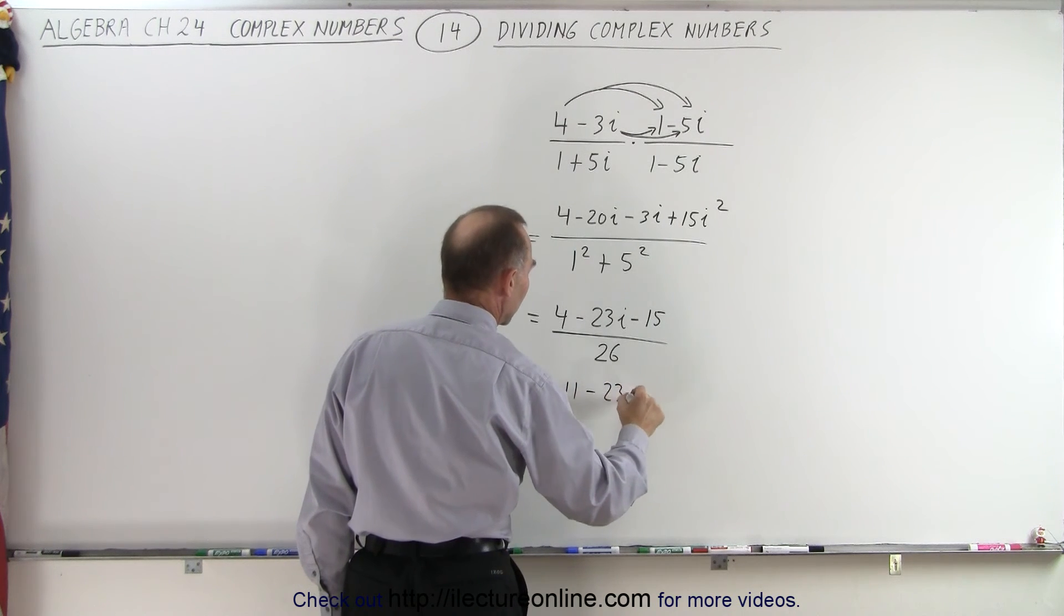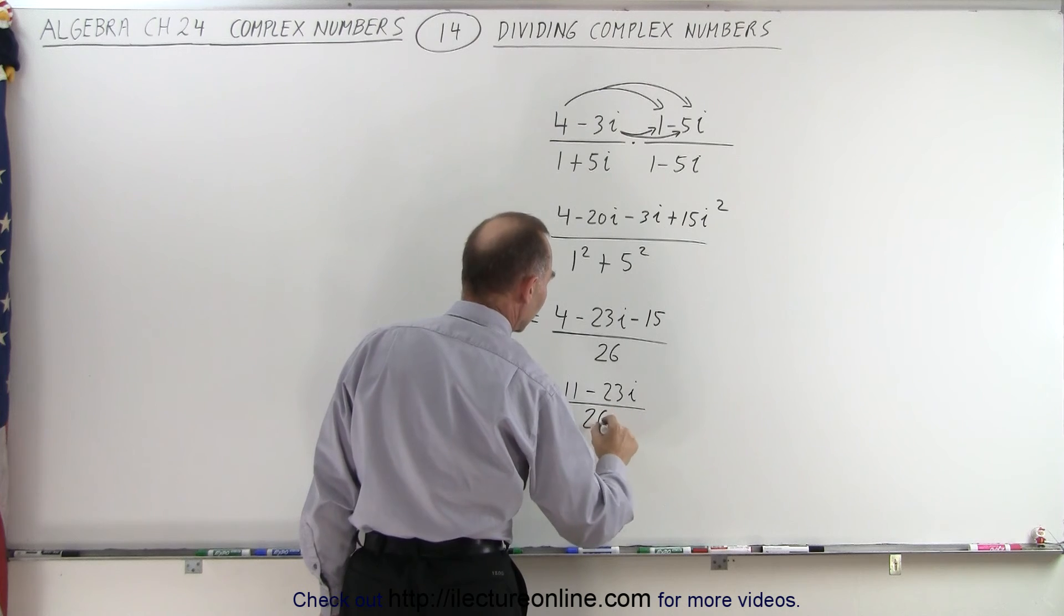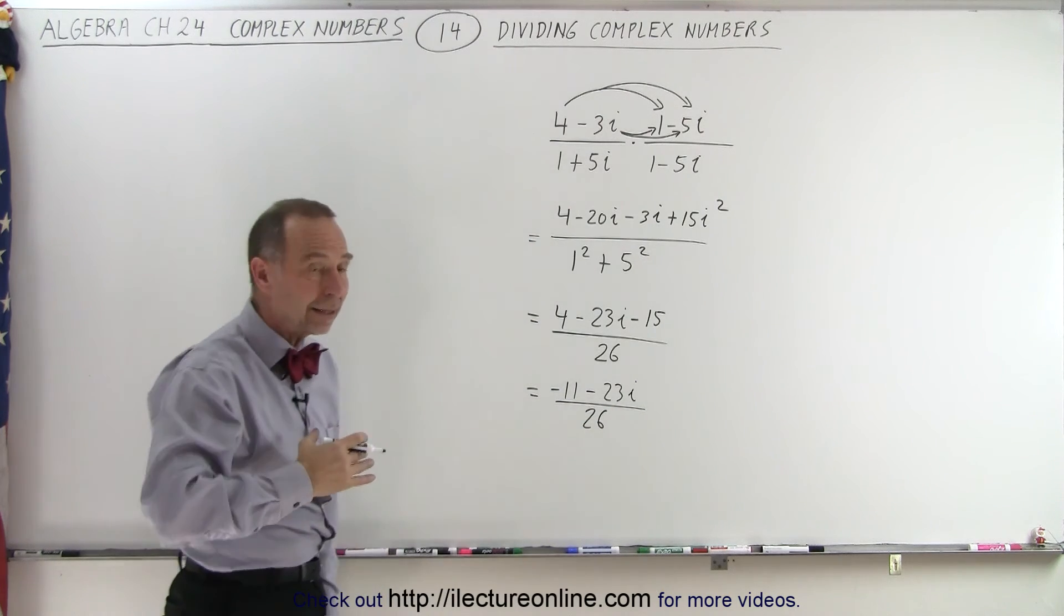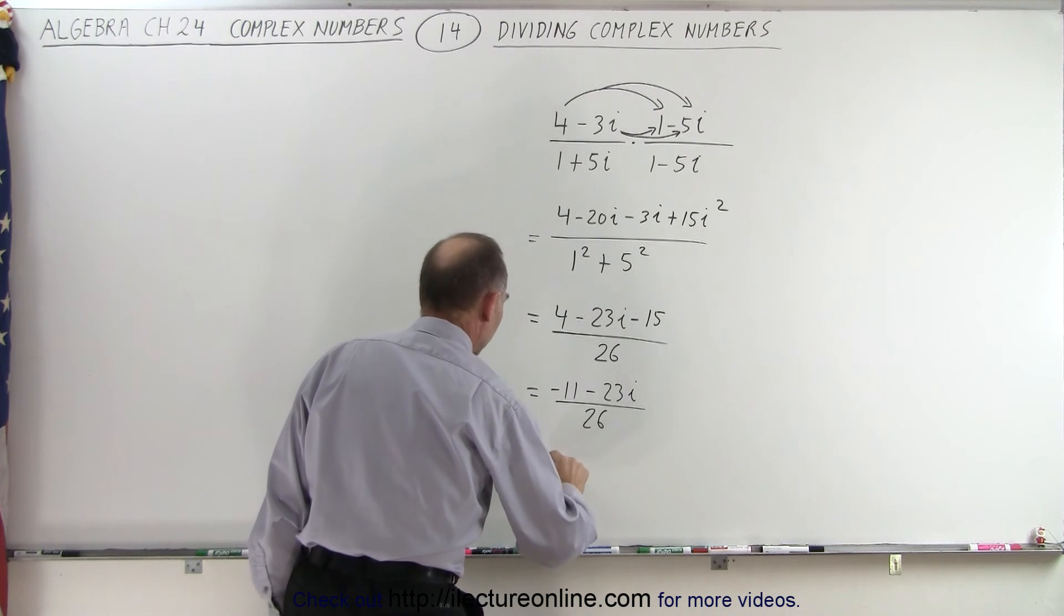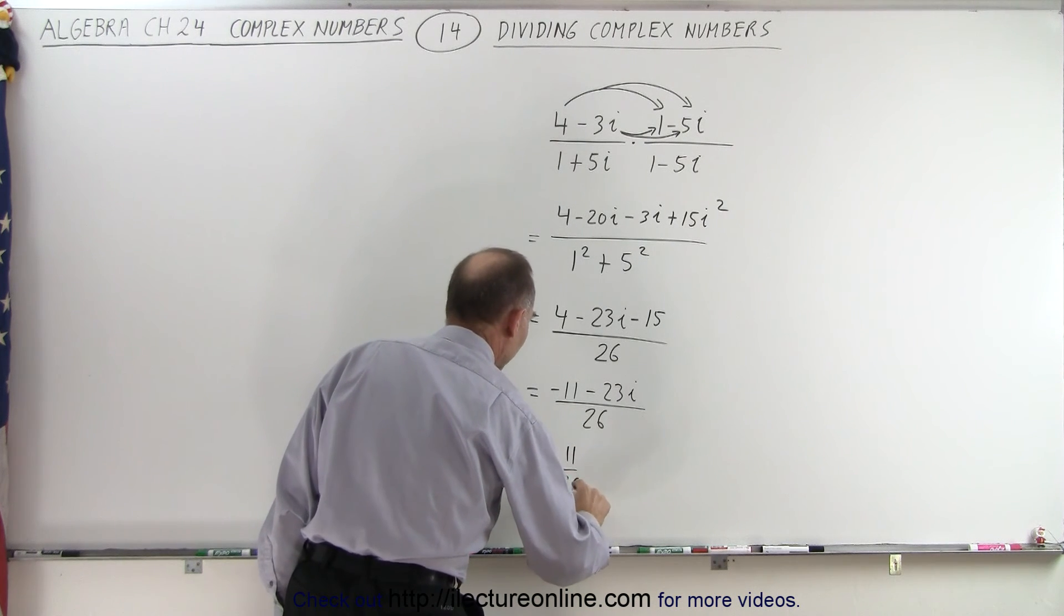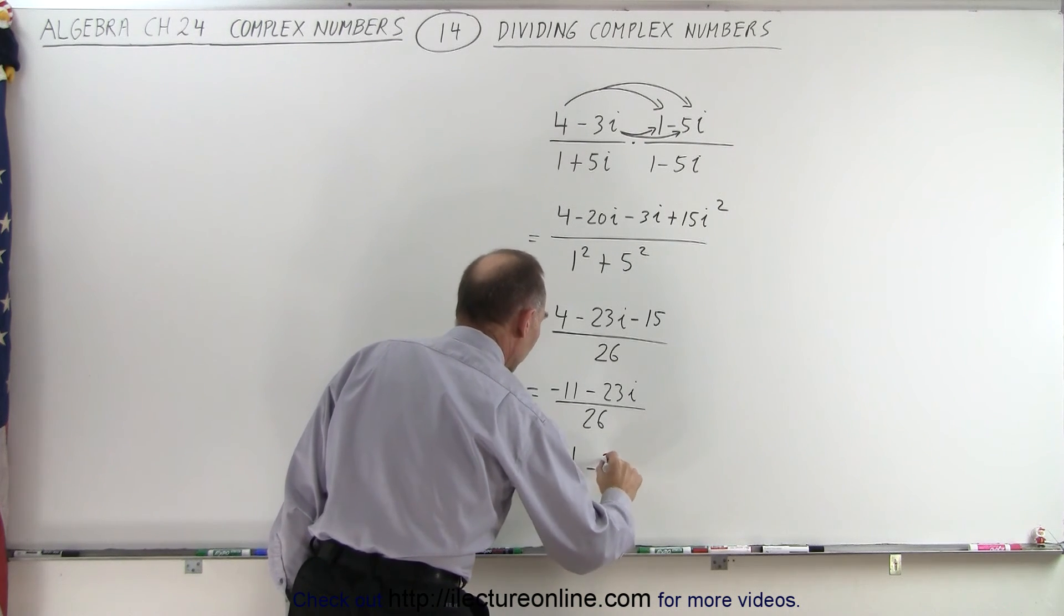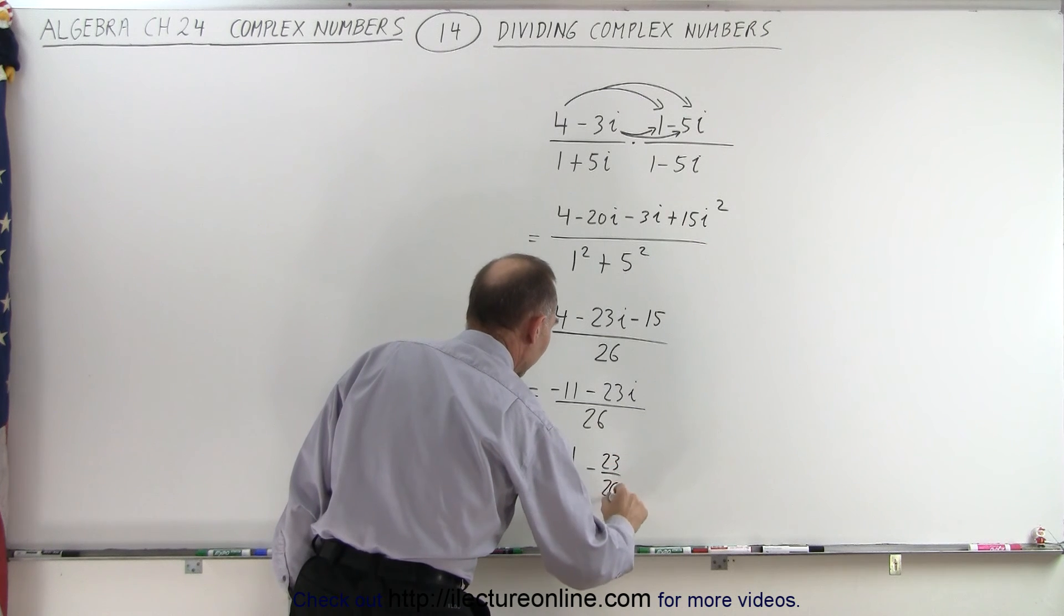Minus 23i divided by 26. And typically we like to write it as a real and imaginary part. So this becomes equal to minus 11 over 26 and minus 23 over 26i.